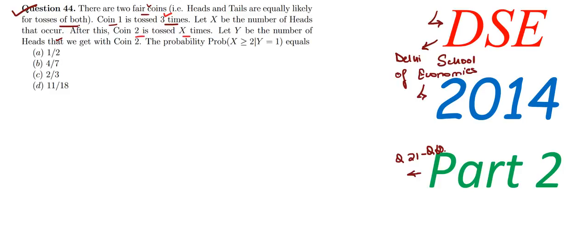After this, coin 2 is tossed X times. So we are tossing coin 2 X times — that is, the number of heads coming up in coin 1. Suppose we got three heads in coin 1, then we will toss coin 2 three times. Now let Y be the number of heads that we get in coin 2.